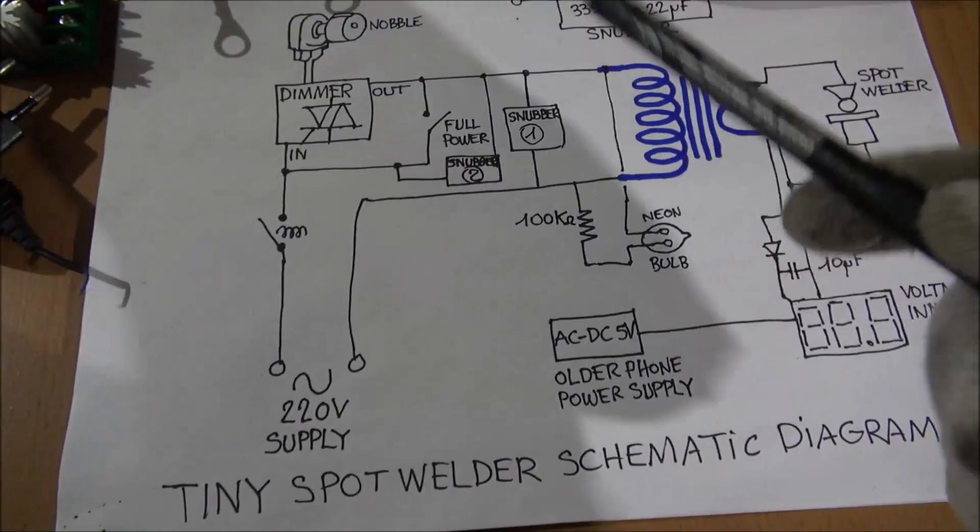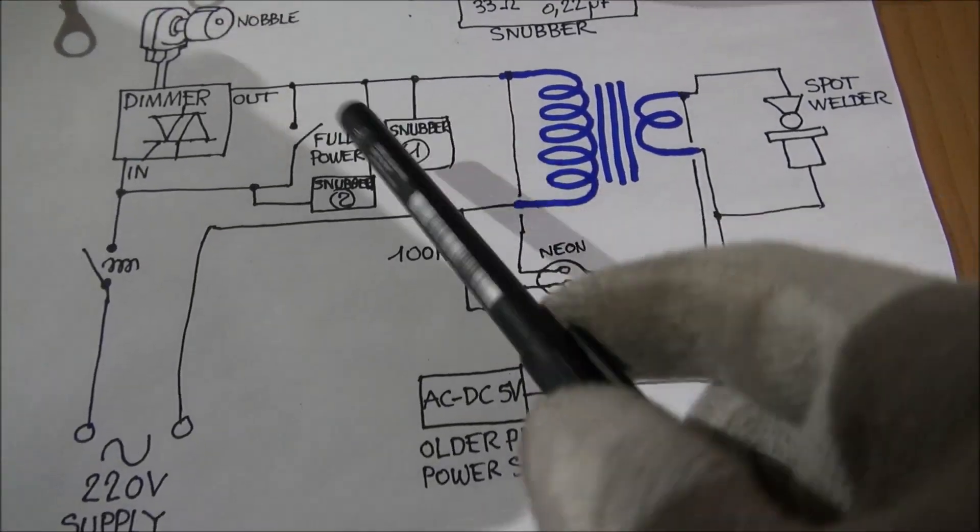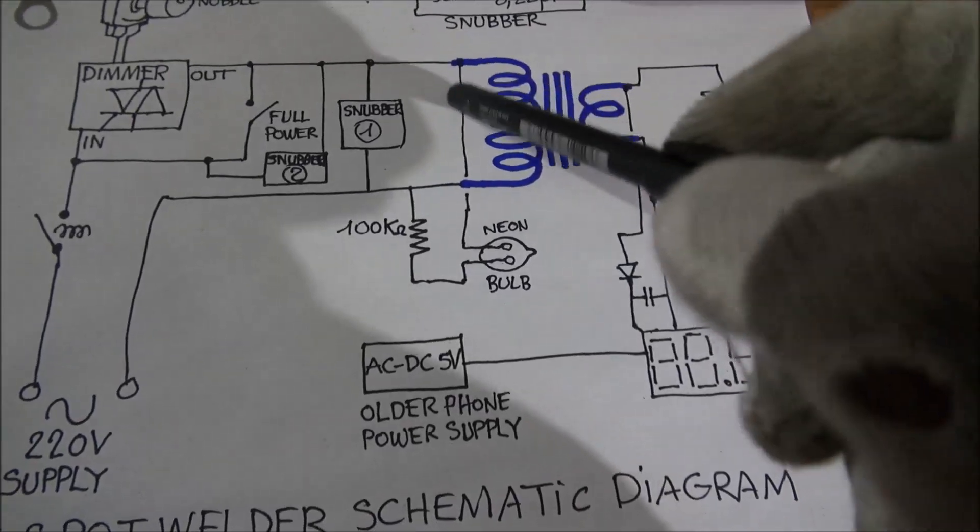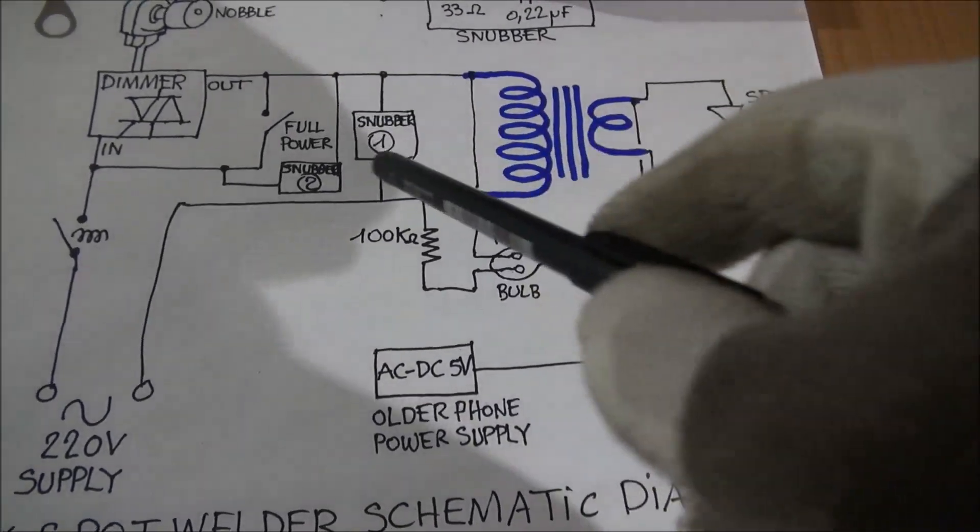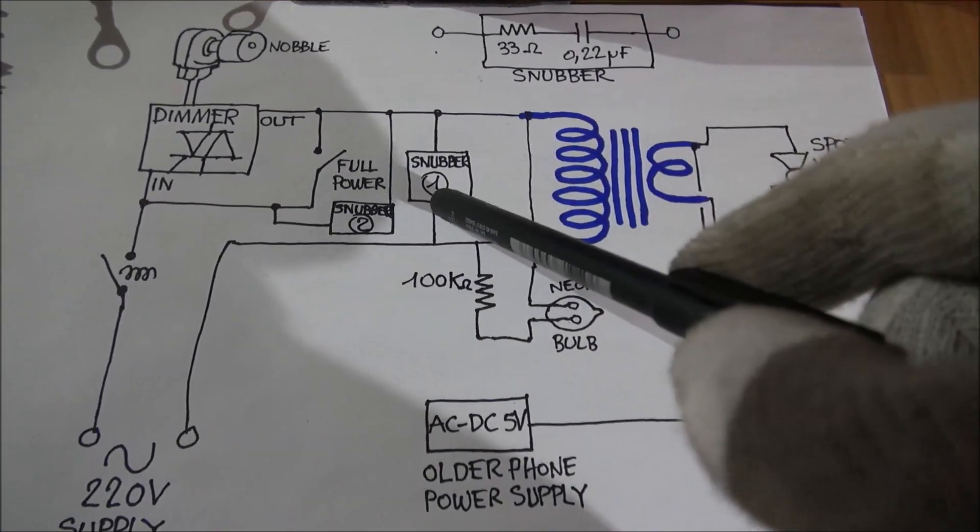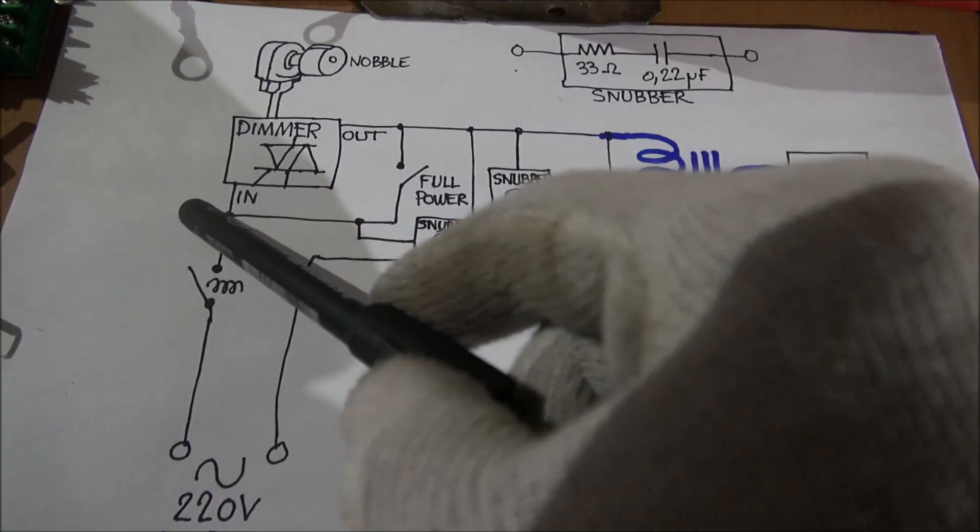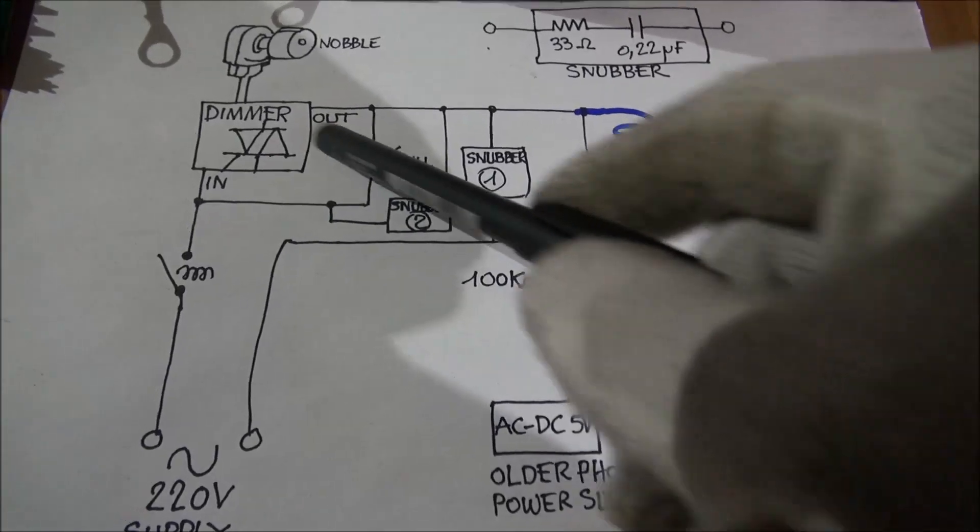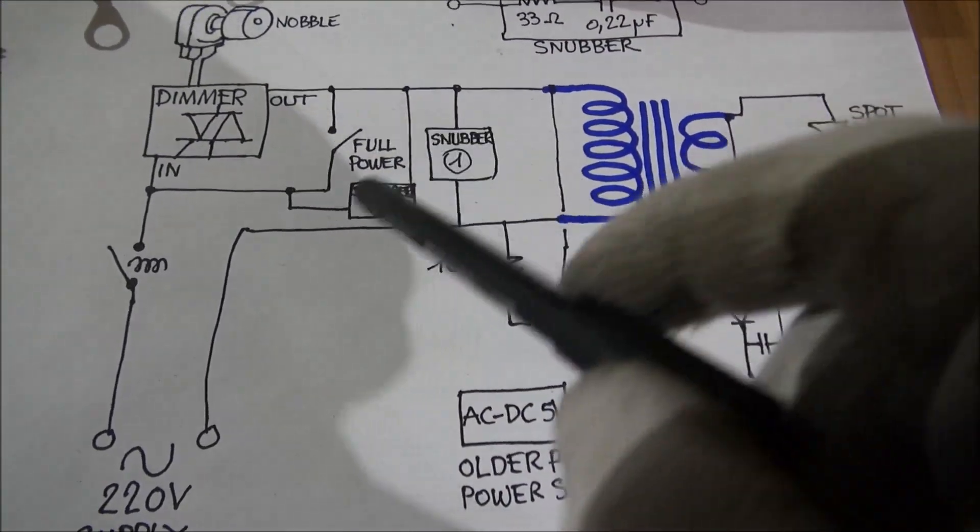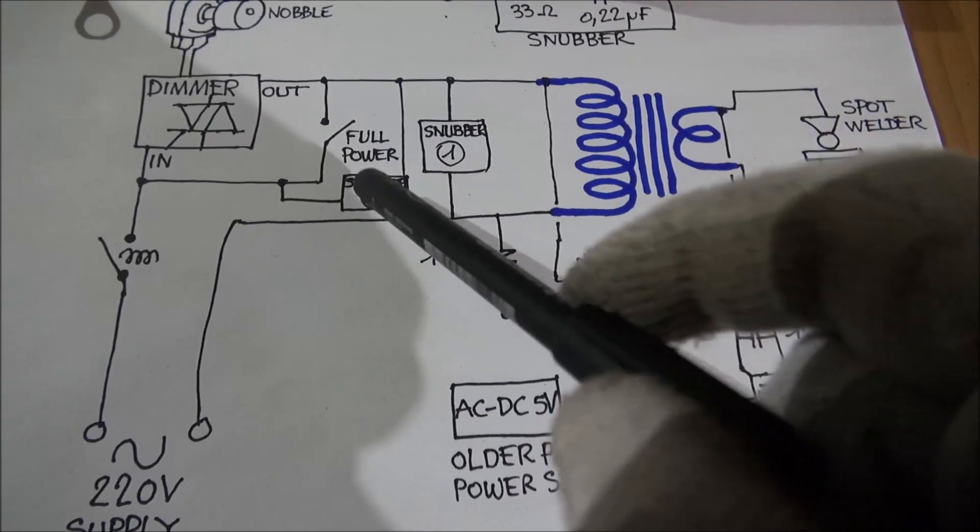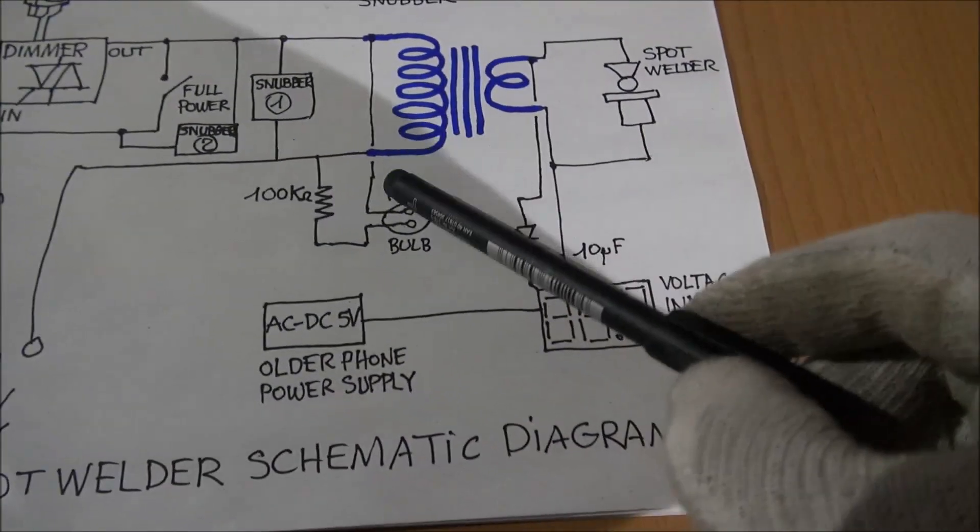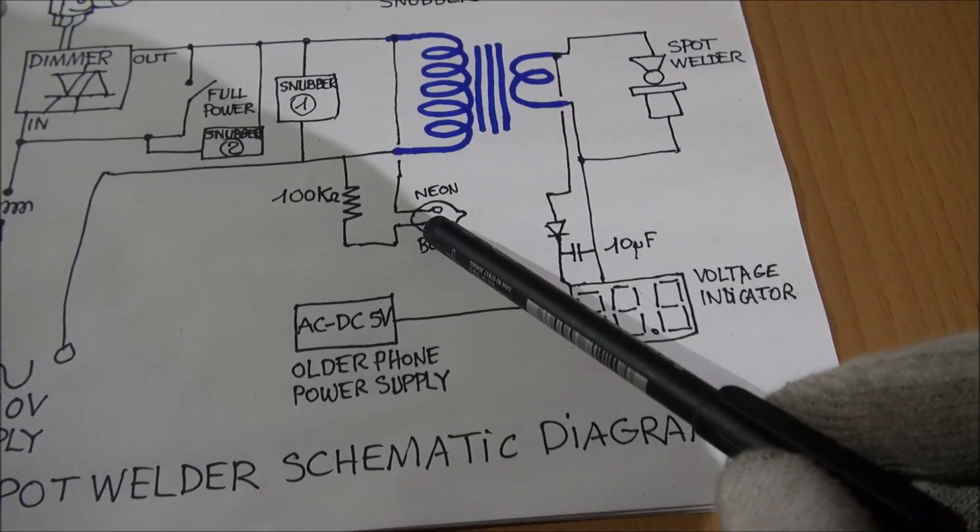From my experience, I can tell you you need to have two snubbers. One snubber on the primary of the transformer here, and one snubber on the in and out of the dimmer. You must have two snubbers, snubber here and snubber here.